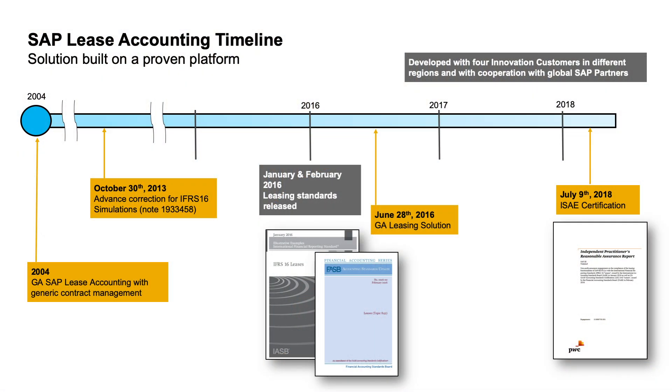How well does the solution work? SAP engaged PwC to test the solution and to deliver an assurance report. In their certification approach, they took the illustrative examples found in the leasing standards and manually calculated the expected results. Next, they created the same examples with SAP Contract and Lease Management, executed the lease valuation calculations, and compared the results. In every condition and case, the calculated results were as expected. And when compared with the manually calculated values, they were the same.